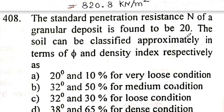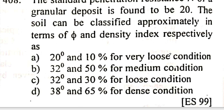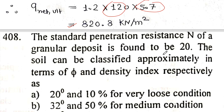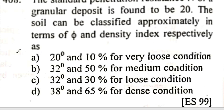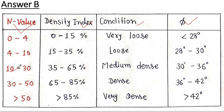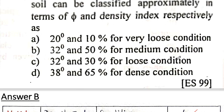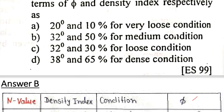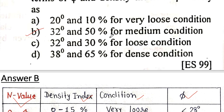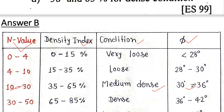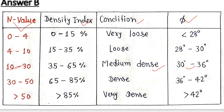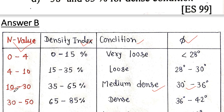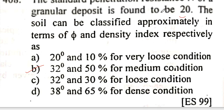Next question: the standard penetration resistance of a granular deposit is found to be N = 20. Classify the soil in terms of φ and density index. From the SPT classification table, for N = 20, the condition is medium dense with φ in the range of 30° to 36°, approximately 32 degrees, and density index of 50 percent. Option B is correct.